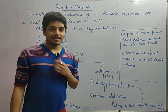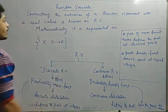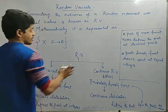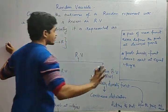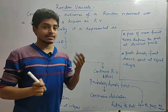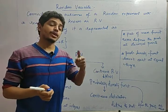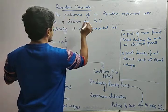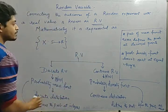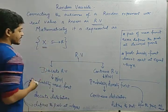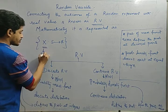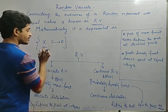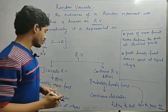Let us see the new topic: random variable. Connecting the outcomes of a random experiment with real values is known as a random variable. In a random experiment we get a sample space, and to every element of the sample space if we can connect a real value, that connection is known as a random variable. Mathematically, a random variable X is a functional mapping from the sample space tending to R, meaning we are assigning a real value to the sample space.